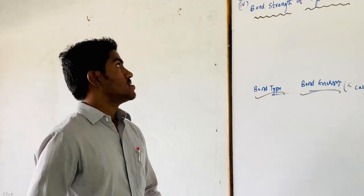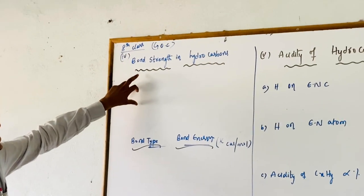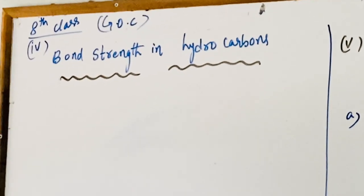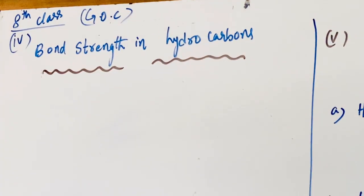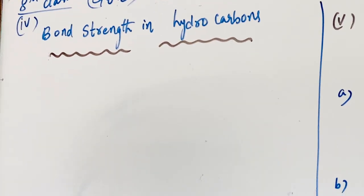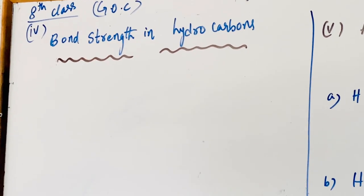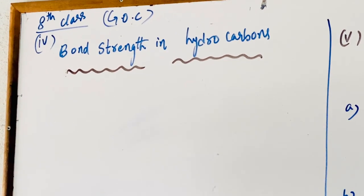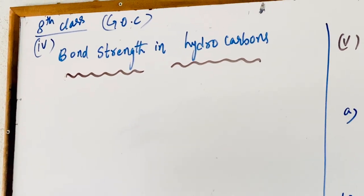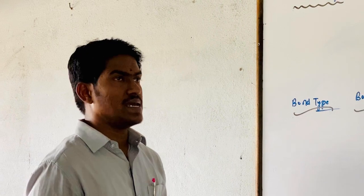Good morning children. Today's session is for 8th class and the topic is continuation of applications of hybridization. In the last class we discussed about the applications of hybridization — the first application is size of the hybrid derivative, second one is bond length, and third one is electronegativity.